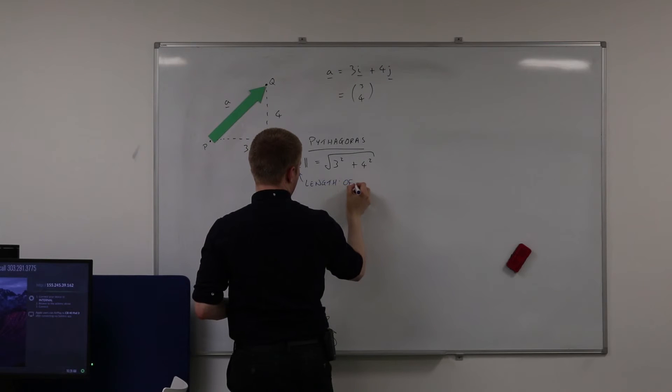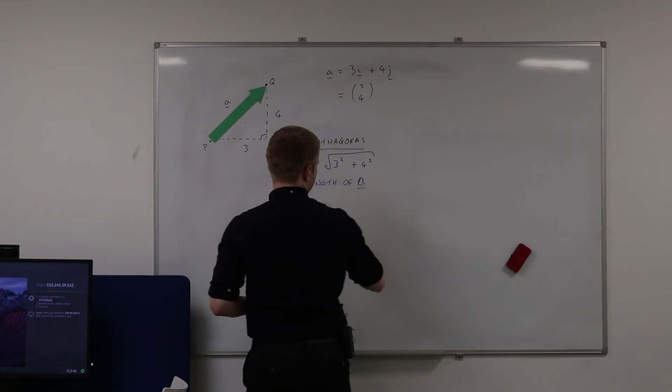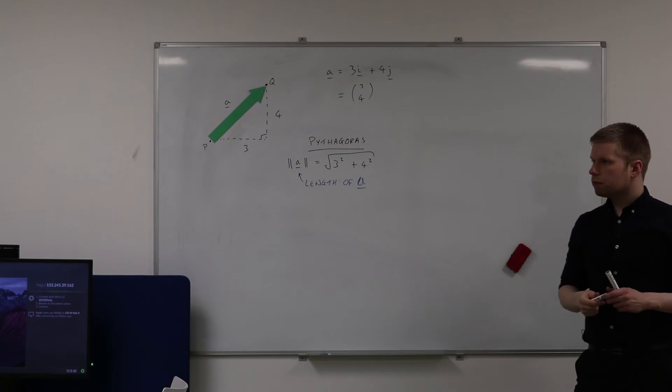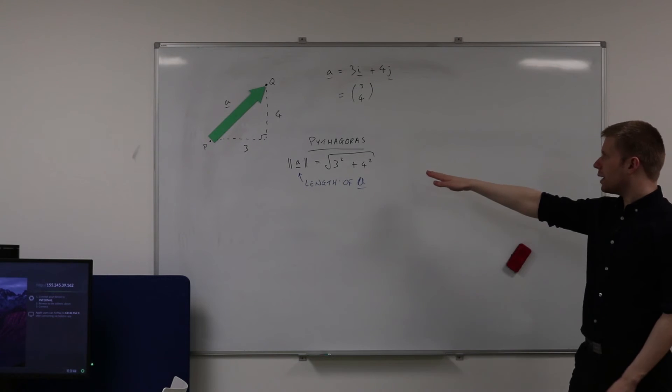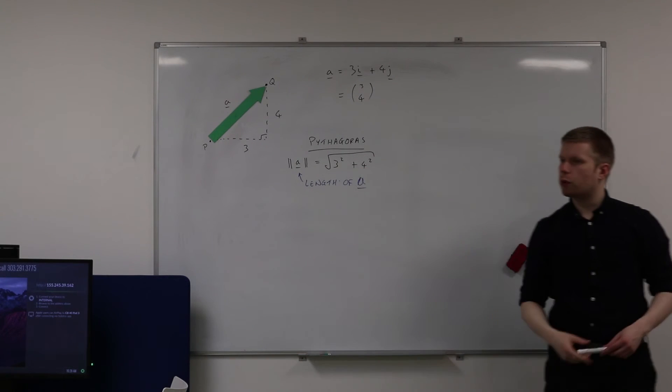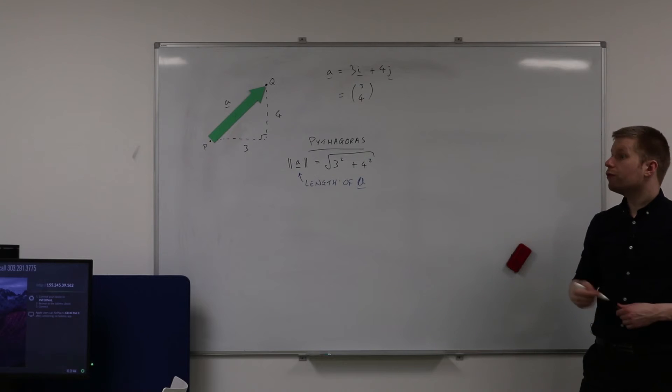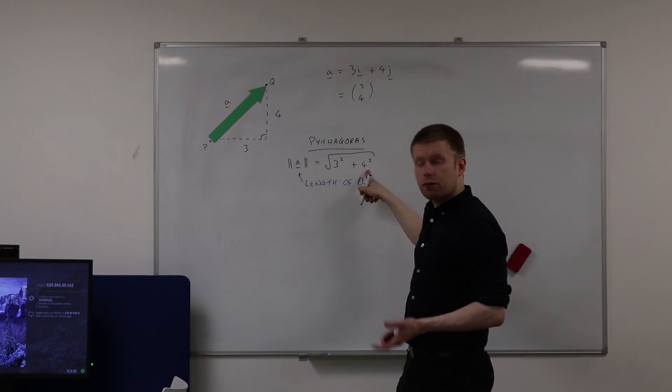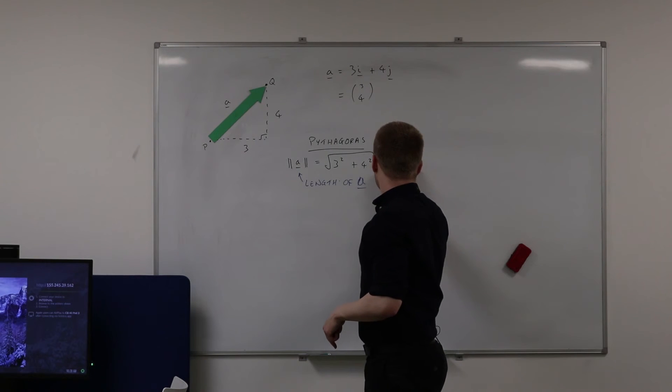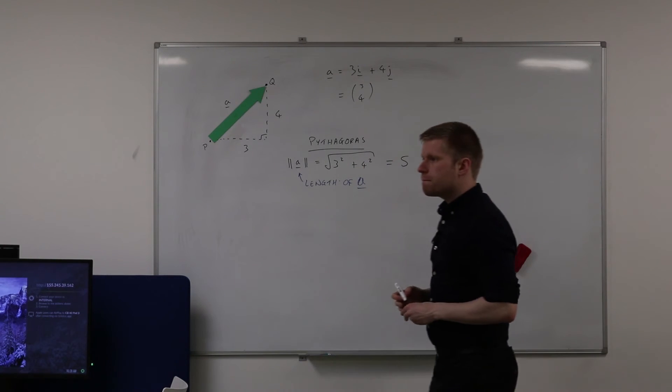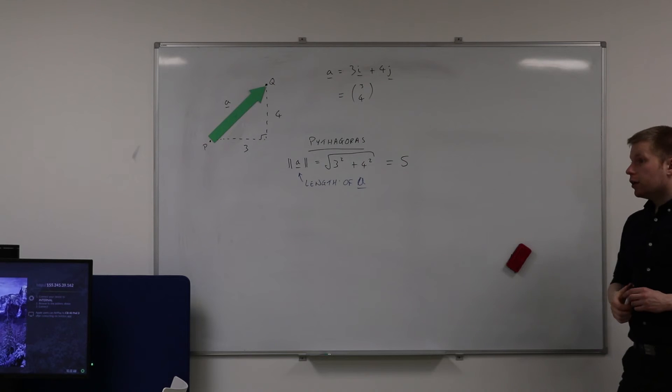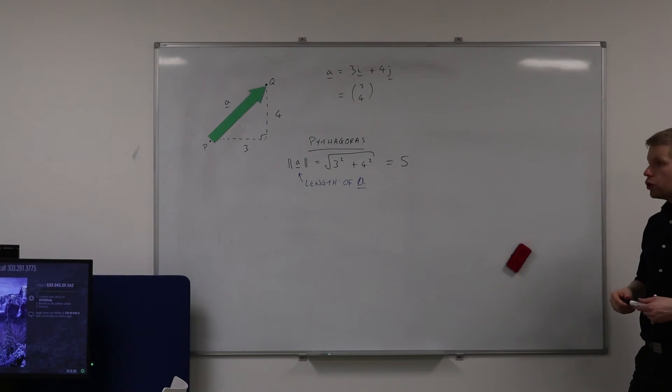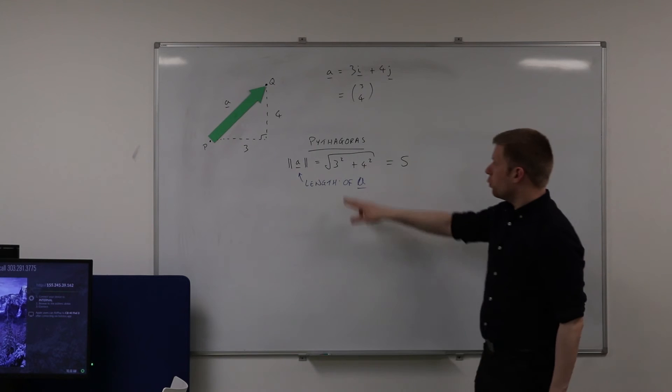So it's the length of a. So in this case, what is the length of a? What is three squared plus four squared square rooted? Five, yeah exactly, because three squared is nine, four squared is 16, add them together you get 25, square root it. Good. So this is something called a Pythagorean triple.